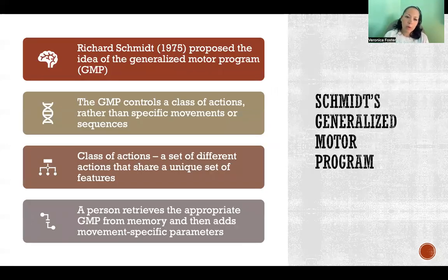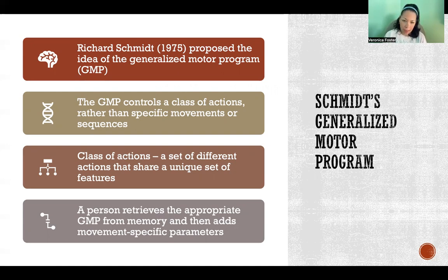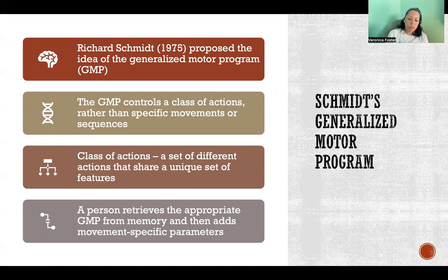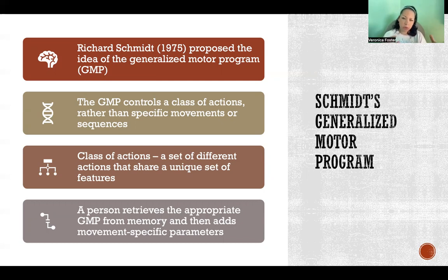Richard Schmidt proposed the idea of the generalized motor program. The idea is that a generalized motor program controls a whole class of actions — a whole group of actions that share unique features, making those actions related and very similar in many ways. The person retrieves the appropriate GMP from memory and then adds movement-specific parameters, tweaking the motor program so that it's specific to that individual movement and environmental context.